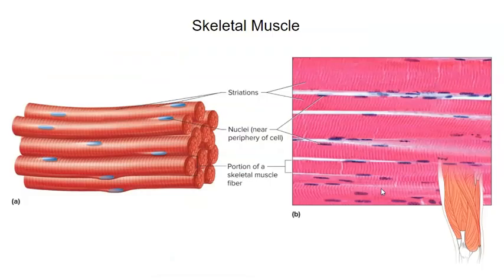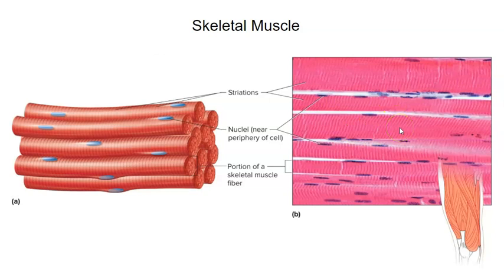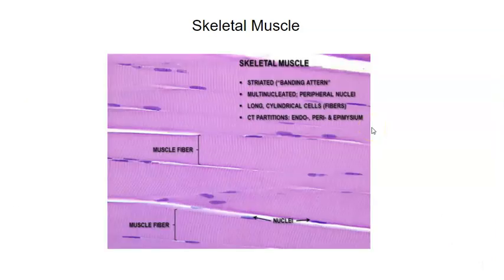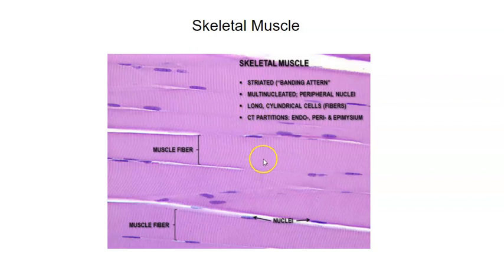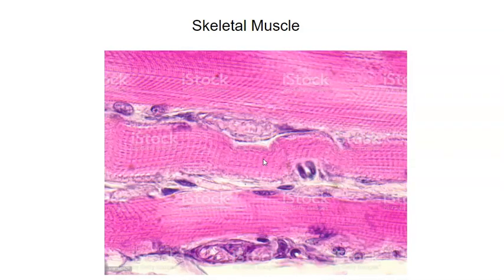Looking at skeletal muscle under the microscope: notice all the nuclei are on the periphery of the cells. Each long cell runs the length of the fiber. You can clearly see the striations running perpendicular to the longitudinal axis of the muscle. Striations run both perpendicular and along the length of the cell. The fibers are long, cylindrical, multinucleated, and striated — look for those characteristics.